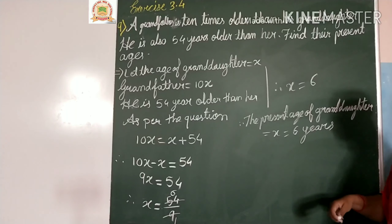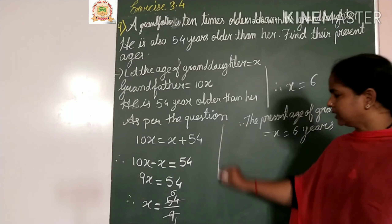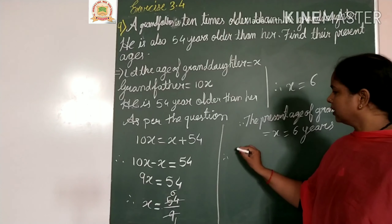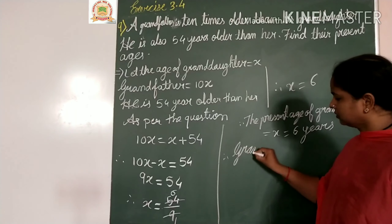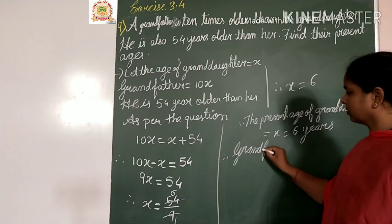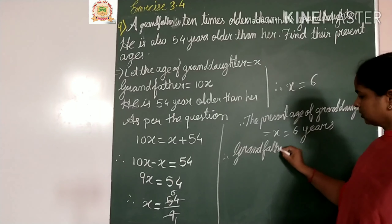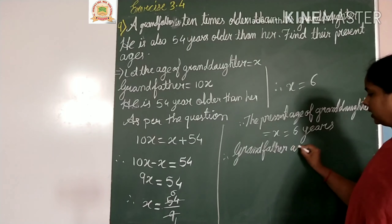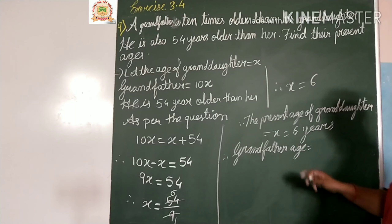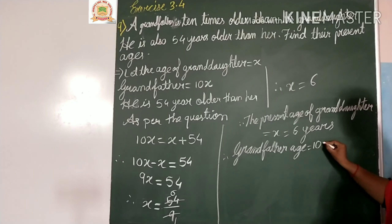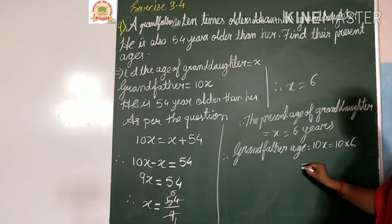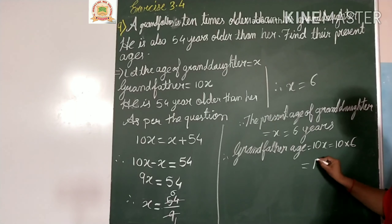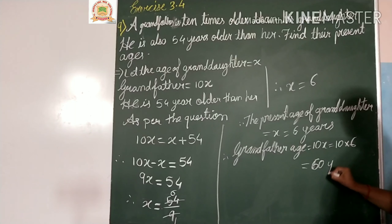Similarly, the grandfather's age equals 10x, which is 10 into 6, equals 60 years. So granddaughter's present age is 6 years and grandfather's present age is 60 years.